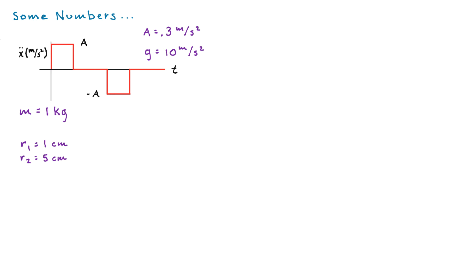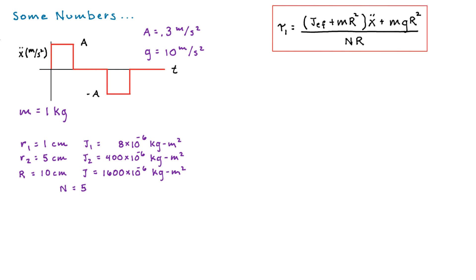The gears will use 1 centimeter for the small gear and 5 centimeter radius for the big gear. So you can imagine this takes up a fair amount of real estate. Here's some inertias for gear 1 and gear 2. And here is the radius of the drum or the winch and its inertia. So clearly we have a gear ratio n equals 5.